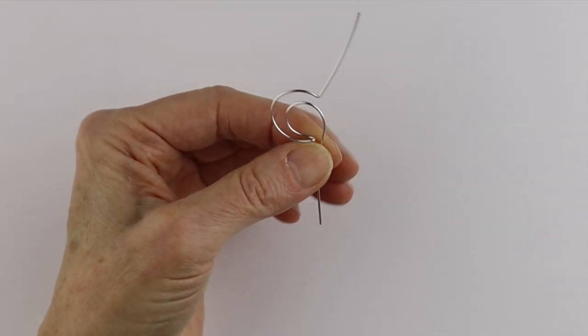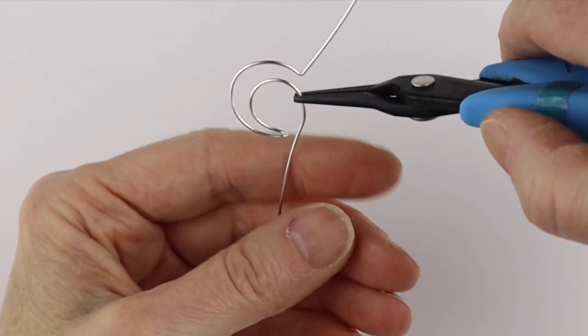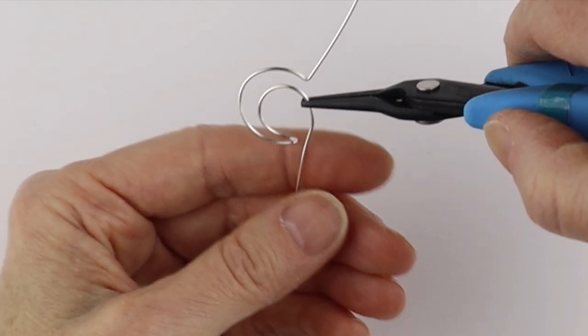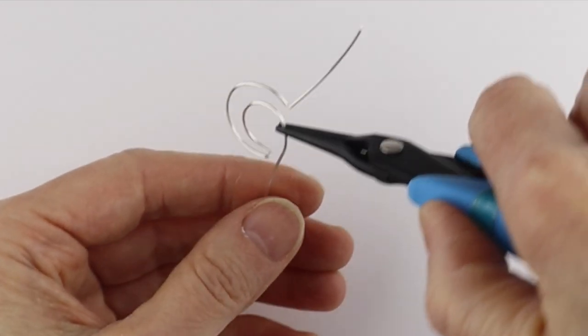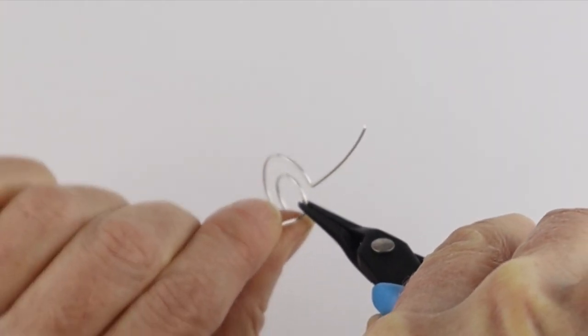And then we want to bend this one back. So same thing, we're going to help it out. Just eyeball it or you could print out a template with different moon outlines on it. Just hold this here and then just, I'm going to bend it to the front. So same thing, push it.